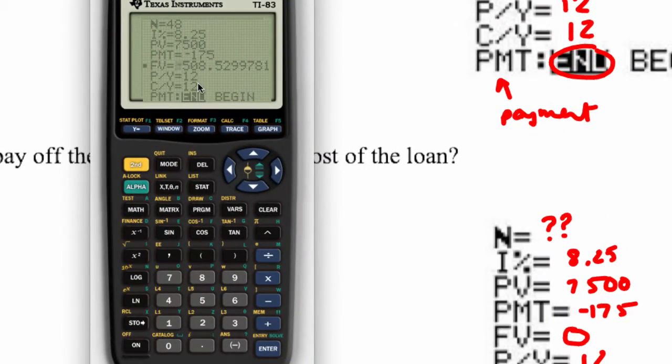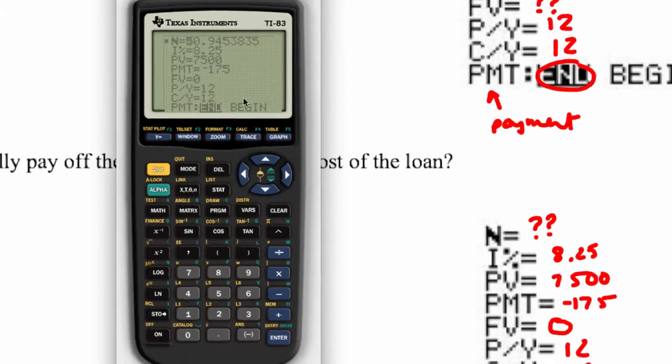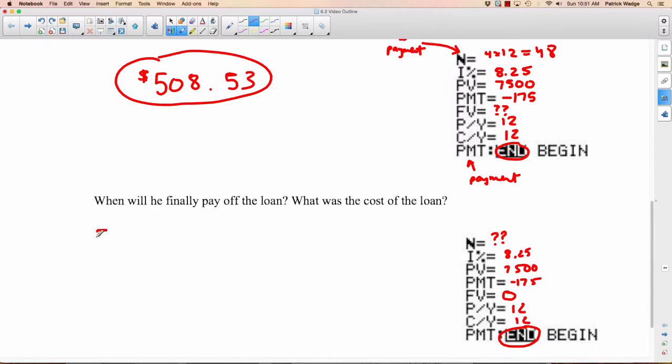Let's go back here. We're going to change this to 0, and then go up to here. You can leave it. Now it's 0. So this is the one we want to know. So I go alpha, enter, and I get 50.9. And we're talking about months here. So this is 50.9 months, but you're not going to pay for part of a month. So that means 51 months.